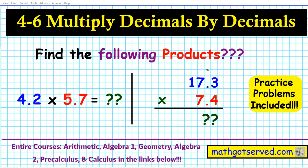Good day students, welcome to mathgotserved.com. In this clip we're going to be going over section 4.6 on our series on operations and decimals. We're going to be taking a look at how to multiply decimals by decimals. The types of problems we're going to be covering are 4.2 times 5.7 and 17.3 times 7.4. Don't forget we have some practice problems for you to try out at the end of this presentation in order for you to demonstrate mastery of the contents covered.